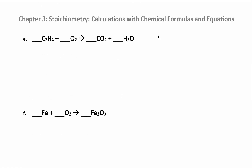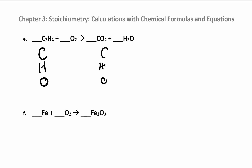Just a couple more. This is a combustion reaction. Combustion means you have carbon and hydrogen — sometimes you have other things in the compound as well — but you're reacting it with oxygen and you always get the same products: carbon dioxide and water. We'll talk about combustion reactions again in the next section. Whenever you have a combustion reaction, it's easier to balance if you do it in this order: C, H, and then O — the CHO method.